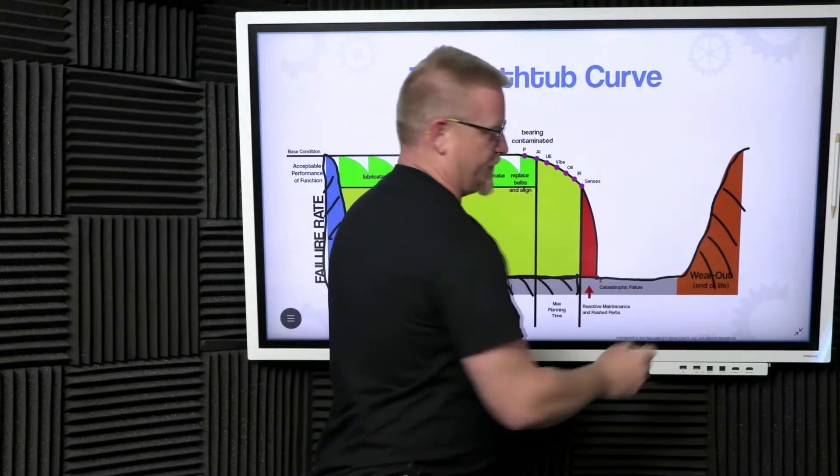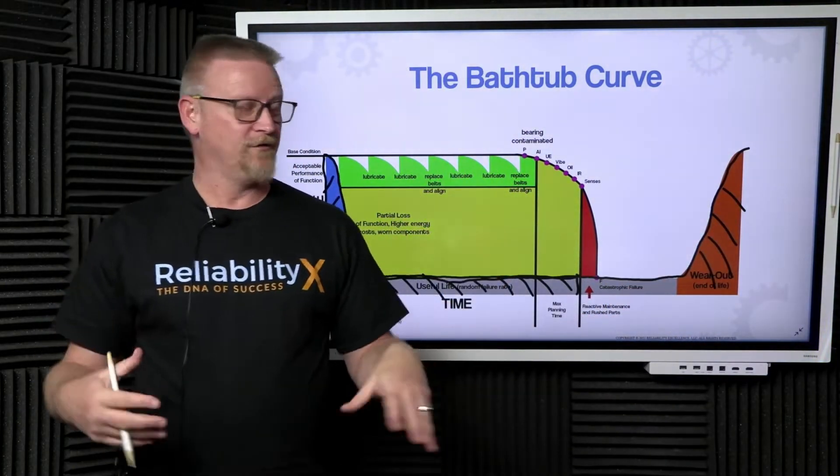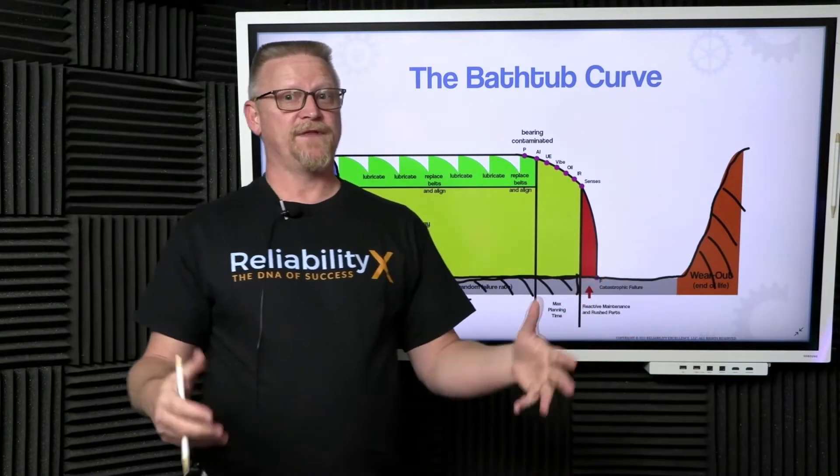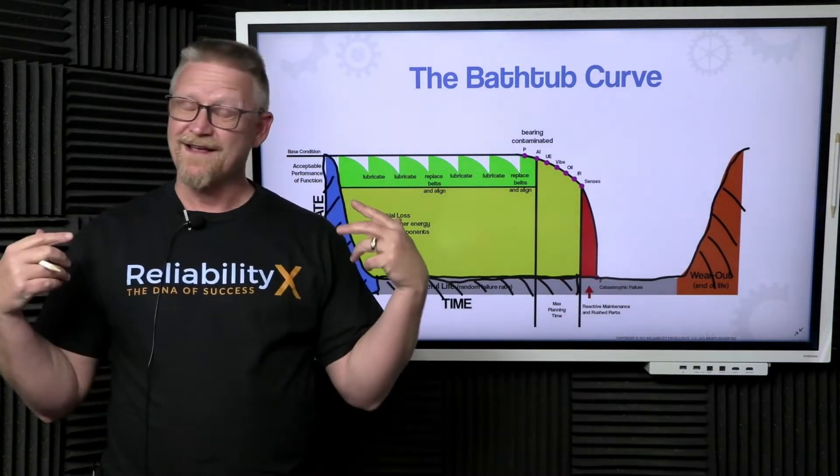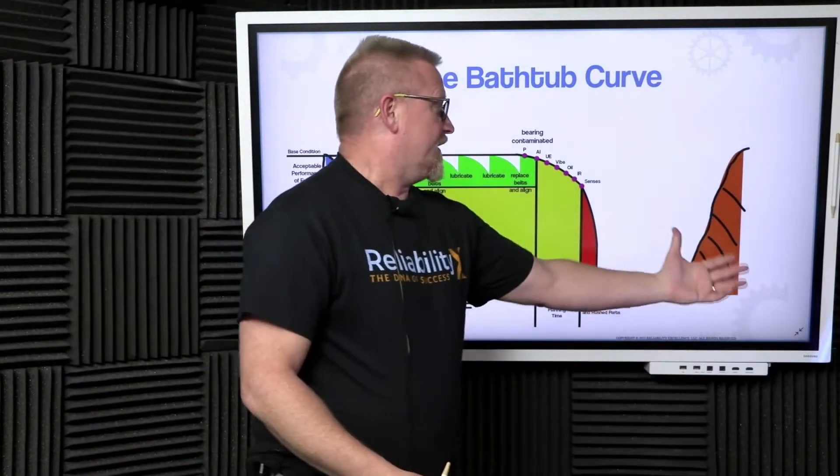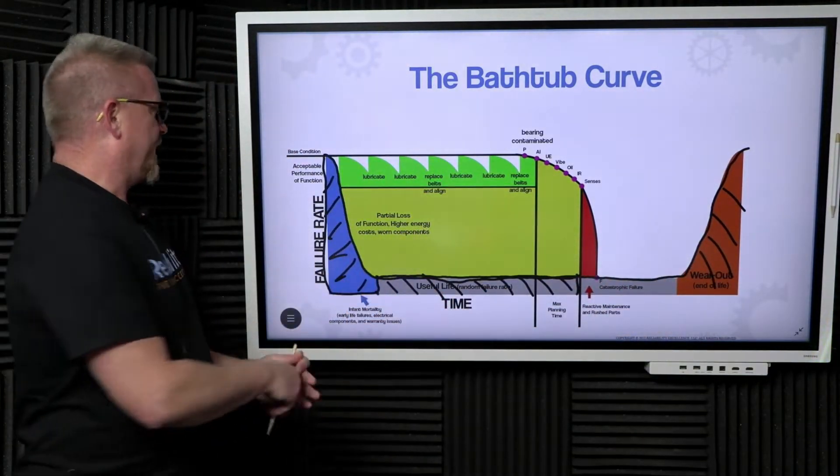Many cases things like lamps, light fixtures—the lamp itself—oftentimes are either infant mortality or they end up in wear out phase. Otherwise this thing is a unicorn. Our mechanical equipment that rotates doesn't typically end up there.